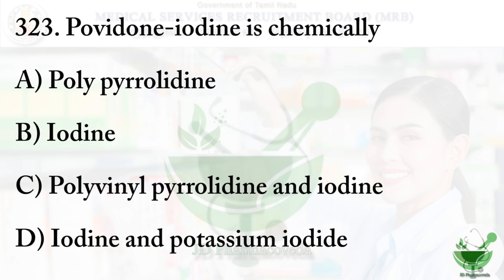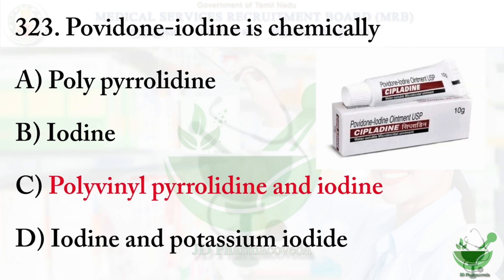Question number 323: Povidone iodine is chemically? This question is repeated. Option A: polypyrrolidine, Option B: iodine, Option C: polyvinylpyrrolidine and iodine, Option D: iodine and potassium iodide. The correct answer is Option C, polyvinylpyrrolidine and iodine.